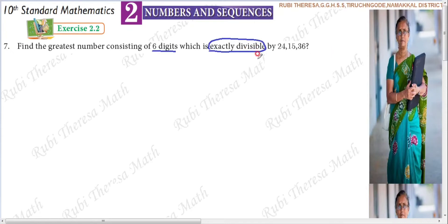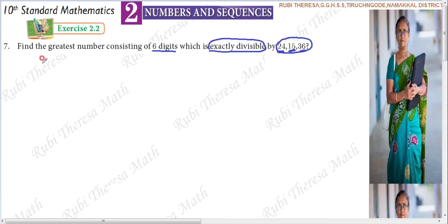If a number is required, is there any guarantee that it will be divided by 15 and 36 also? So if you choose a random number that is a multiple of 24, that is also a multiple of 15 and 36, then it should be a common multiple for all these 3 numbers.